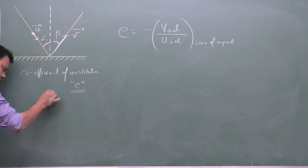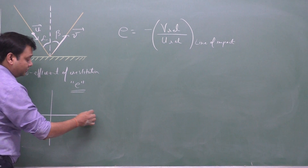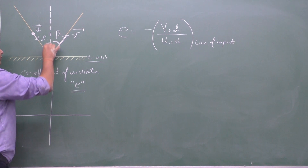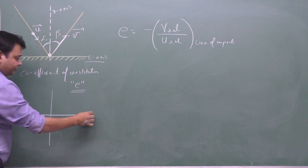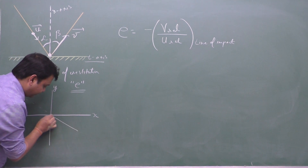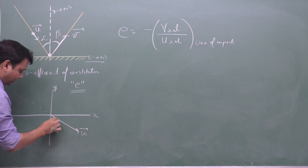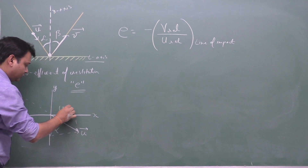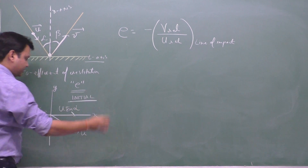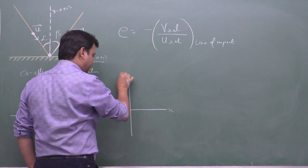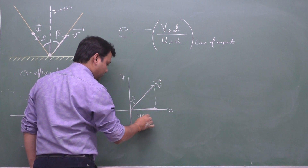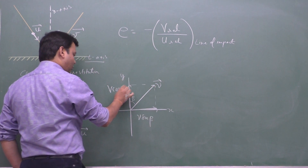Looking at this situation: the T-axis is the tangential axis (X-axis) and the N-axis is the normal axis (Y-axis). The ball collides with the surface. Before collision, velocity is u at angle alpha, giving components u sinα along X and u cosα along Y. After collision, rebounding velocity is v at angle beta, giving components v sinβ along X and v cosβ along Y.